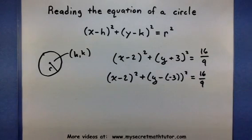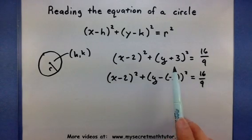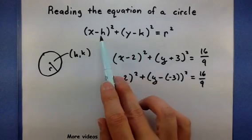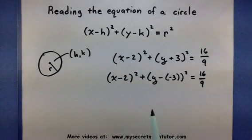Now notice how this doesn't really change the problem. When you subtract a negative number, you still get a positive number. But what it does is it now fits our formula just a little bit better. So we can identify that center point.